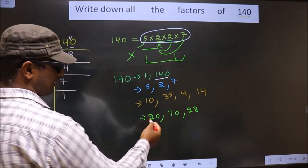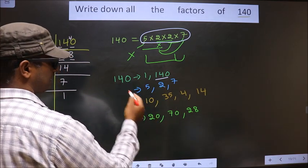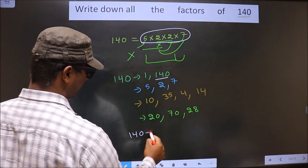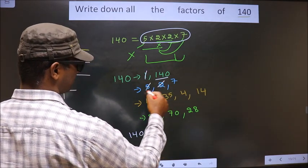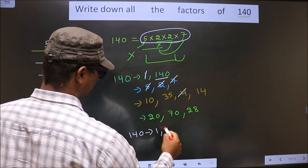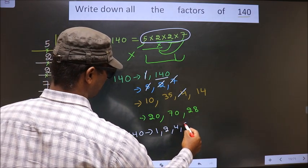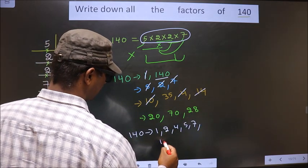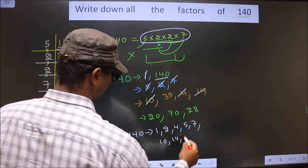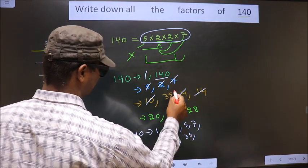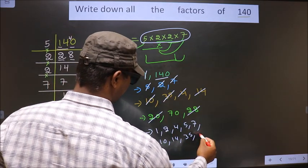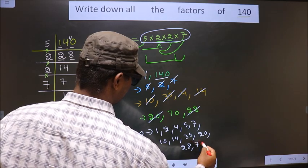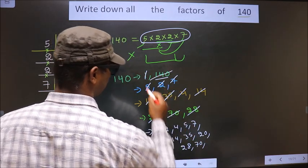Thus, these are all the factors of 140. That is, 1, 2, 5, 7, 1, 2, 4, 5, 7, 10, 14, 35, 20, 28, 70, and finally 140.